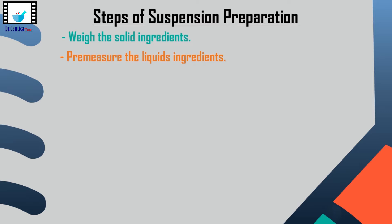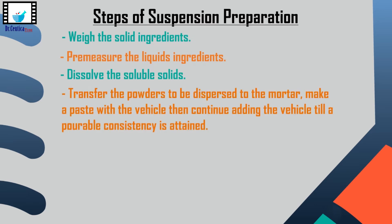If there are certain solids that can be dissolved in the vehicle, then these solids are dissolved in the vehicle in a suitable container using the specific amount needed to dissolve them. If not, we go directly to step 4: transfer the powder to be dispersed to a mortar, then add a small amount of the vehicle to make a paste, and continue adding the vehicle until the paste is of a pourable consistency.